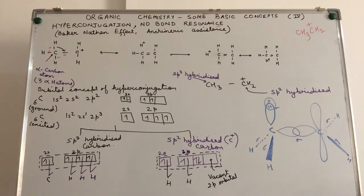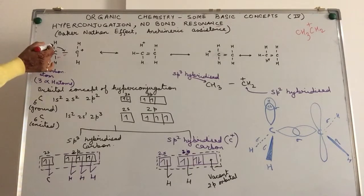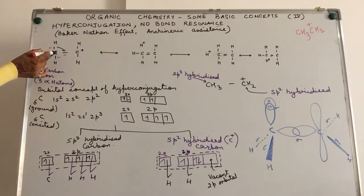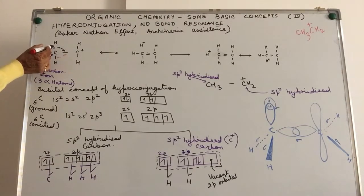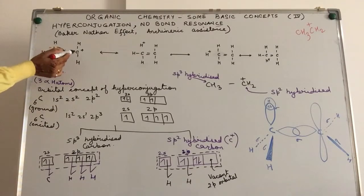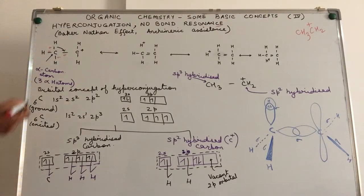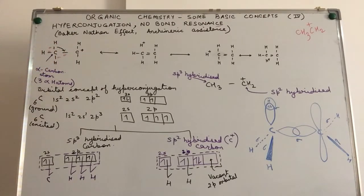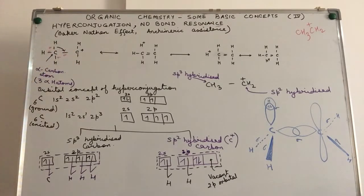How does that make a difference? It is nothing but a ping pong of the bonds happening over here. The single bond — that is the sigma bond between carbon and hydrogen — the electrons which are involved in this tend to shift between the two carbon atoms because this carbon is positively charged and is short of electrons. It wants electrons, so it tries to pull the electrons from the carbon-hydrogen bond of the adjacent alpha carbon atom. With the result, this C-C bond turns into a double bond.